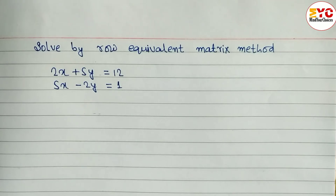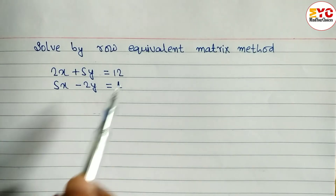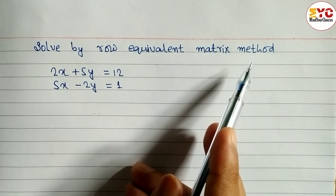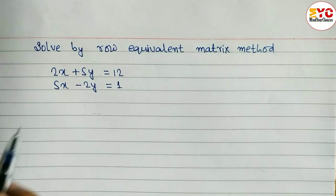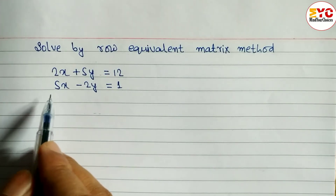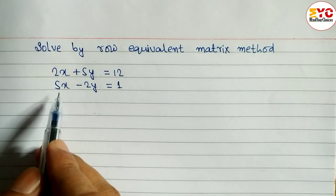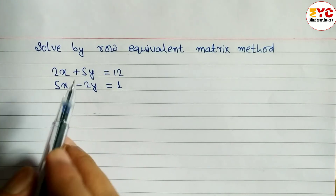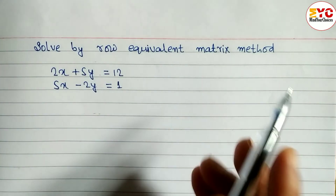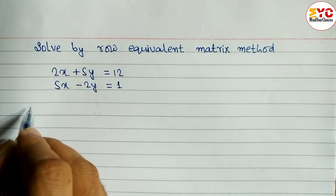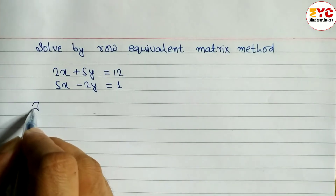Hello everyone. Here I'm going to solve by row equivalent matrix method. Let's take a start. We have to find out the value of x and y by using the row equivalent matrix method.